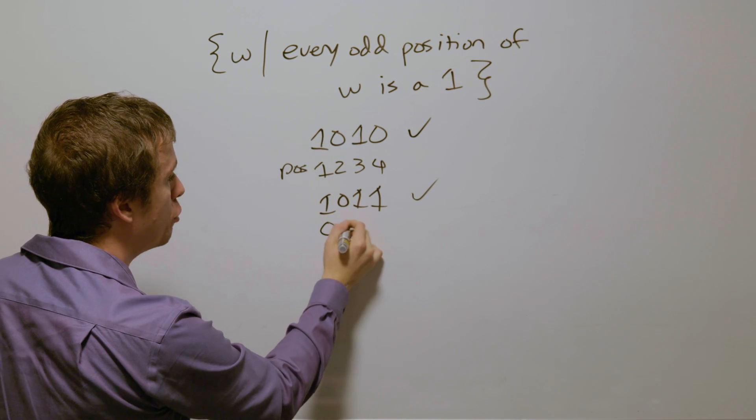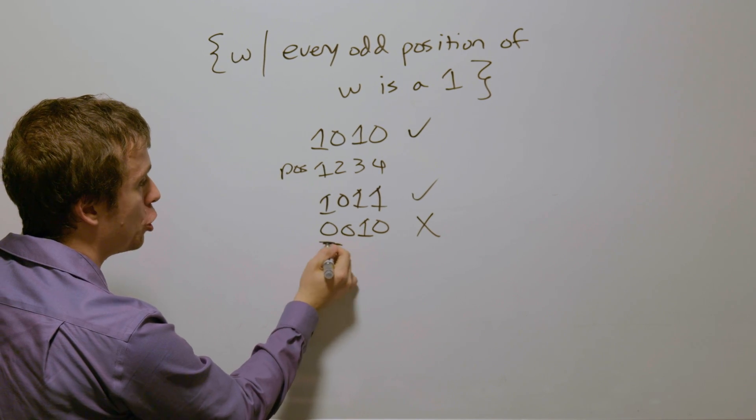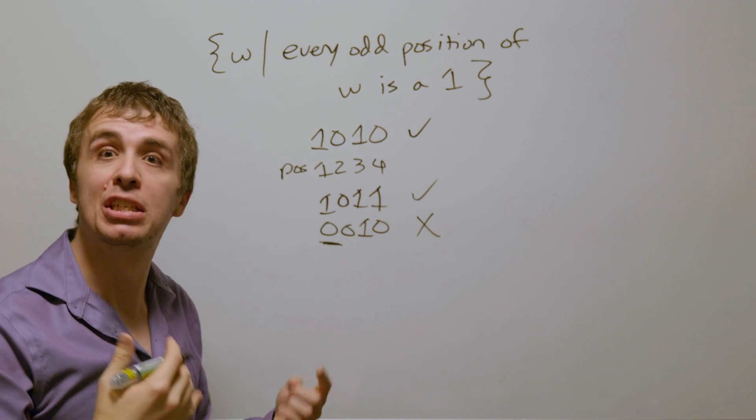If we have 0, 0, 1, 0, then that should not be accepted because position one, which is odd, does not have a one in it.